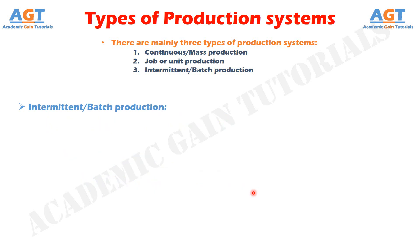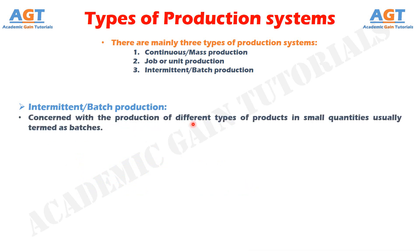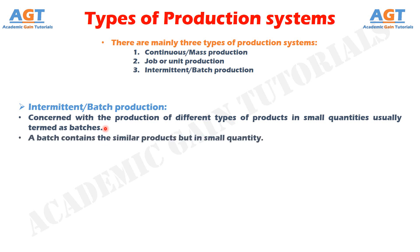Intermittent or batch production is concerned with the production of different types of products in small quantities, usually termed as batches. A batch contains similar products but in small quantity. This is used to meet a specific order or to meet a continuous demand. Batches can be manufactured either only once, or repeatedly at irregular time intervals as and when demand arises, or repeatedly at regular time intervals to satisfy a continuous demand. Under this system, goods may be produced partly for inventory and partly for customers' orders. For example, components are made for inventory but are combined differently for different customers.